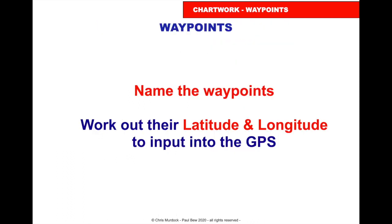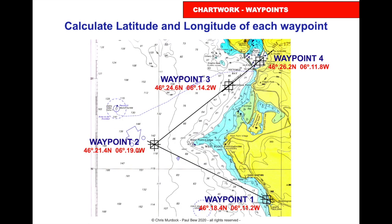Name the waypoints, work out the latitude and longitude, and pop them into the GPS — or you can just drag and drop and place them on your plotter. So there you go: waypoint one, waypoint two, waypoint three, waypoint four.